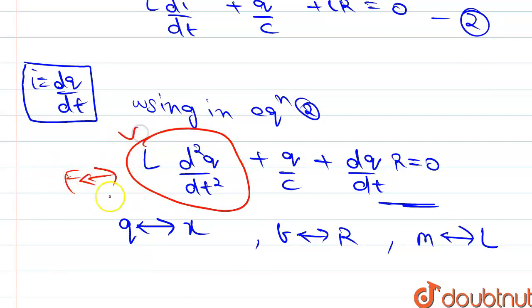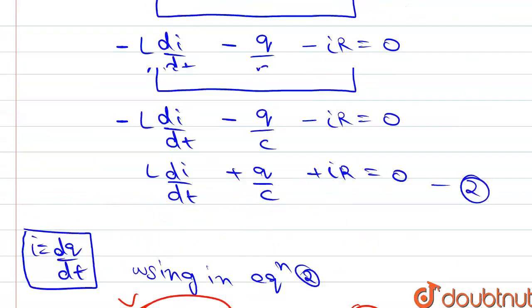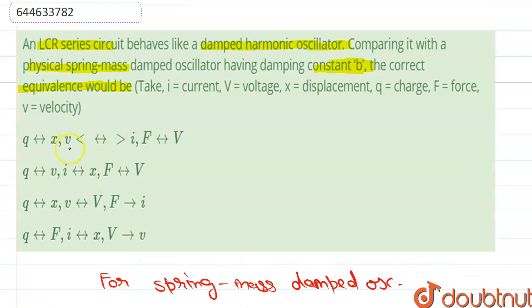And this is our voltage term. So F, force, is similar to voltage, and dq/dt, which is i, is similar to dx/dt, which is velocity. So i is similar to small v (velocity). In the question, we check the options: i is similar to v, force is similar to voltage, and q is similar to x. So the first option is our correct option. Thank you.